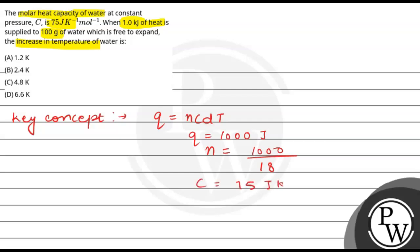The number of moles is 100 grams divided by 18. So 1000 equals 100 over 18 times 75 times delta T.